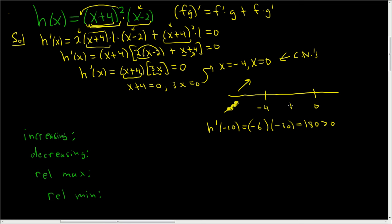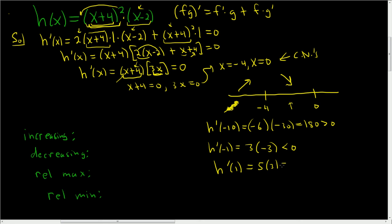Now let's pick a number in the middle interval. Trying negative 1: (−1 + 4) = 3, and 3(−1) = −3, so 3 times −3 = −9, which is less than 0 — so it's decreasing there. Then checking 1 on the right: (1 + 4) = 5, times 3(1) = 3, gives 15, which is positive — so over here it's increasing.